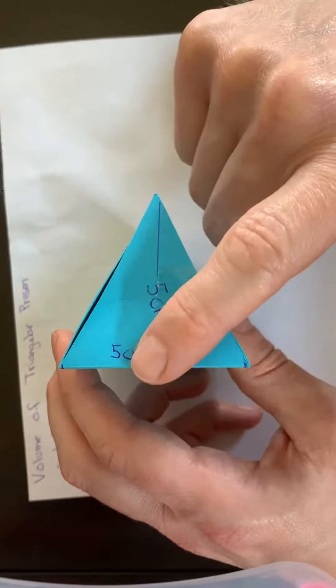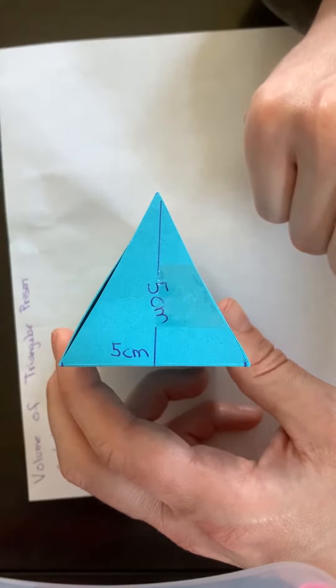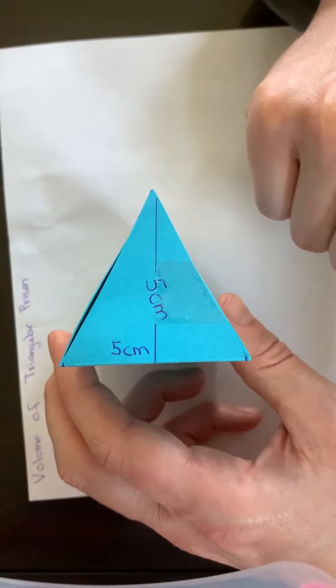So 5 times 5 is 25. 25 divided by 2 is 12.5 centimeters squared.